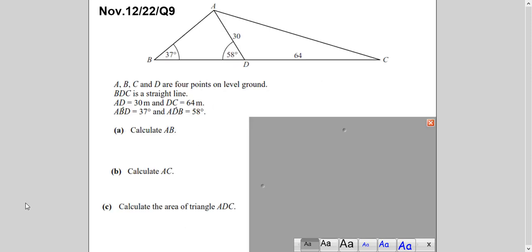So let's begin with the question. So this is the question given to you, and there are three parts of this question. So all the angles and values which are written here are explained in this paragraph also. A, B, C, D are four points on the level ground.